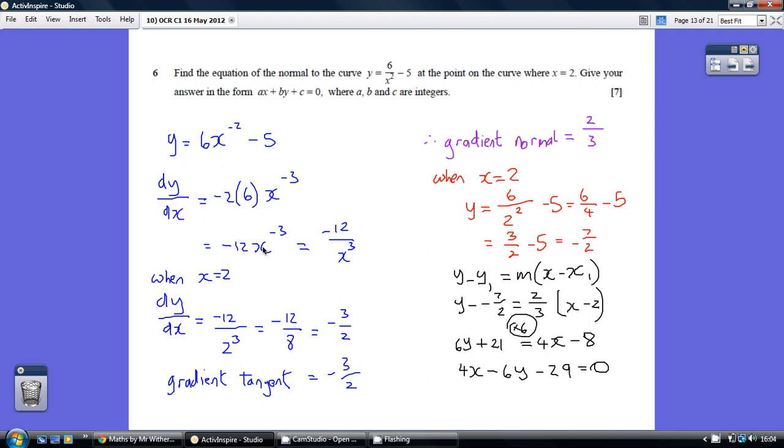And by the way, I've taken the x cubed downstairs again to aid the substitution. So minus 12x to the minus 3 is the same thing as minus 12 all over x cubed. So substituting the 2 in, we get minus 12 over 2 cubed, minus 12 over 8, which is minus 3 over 2.